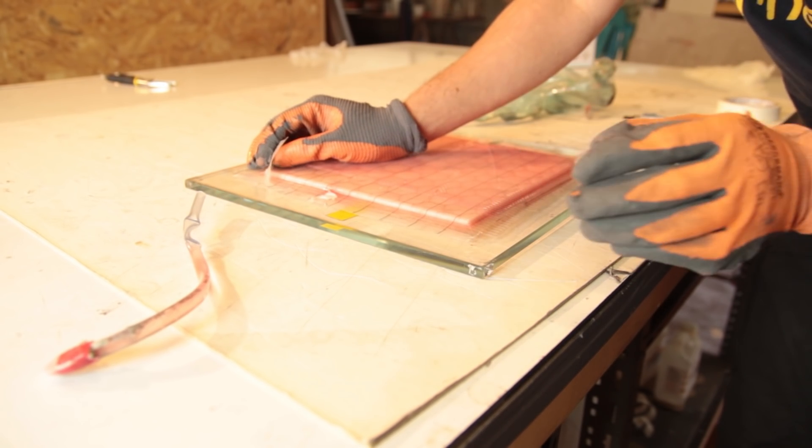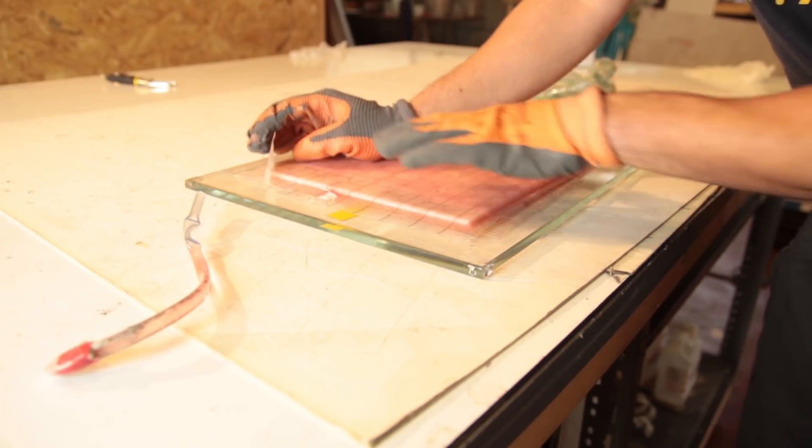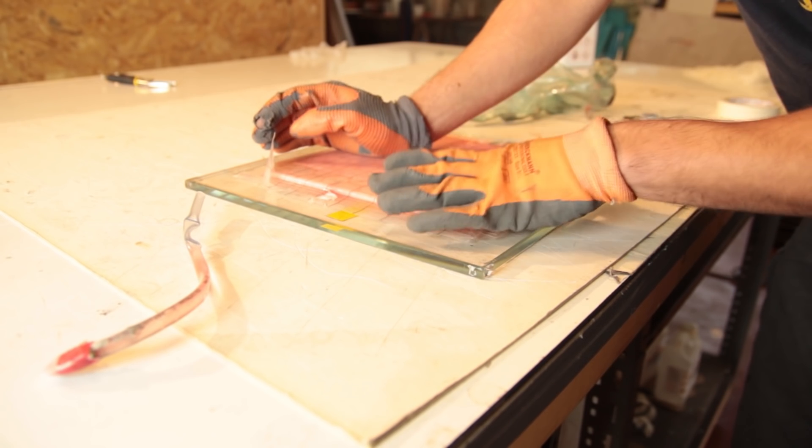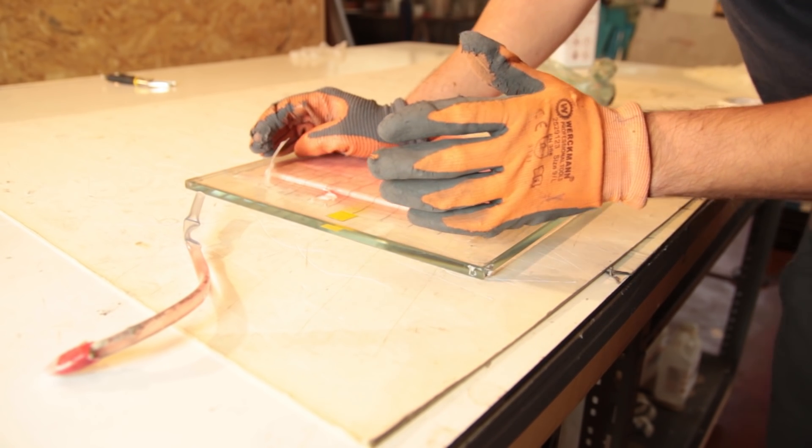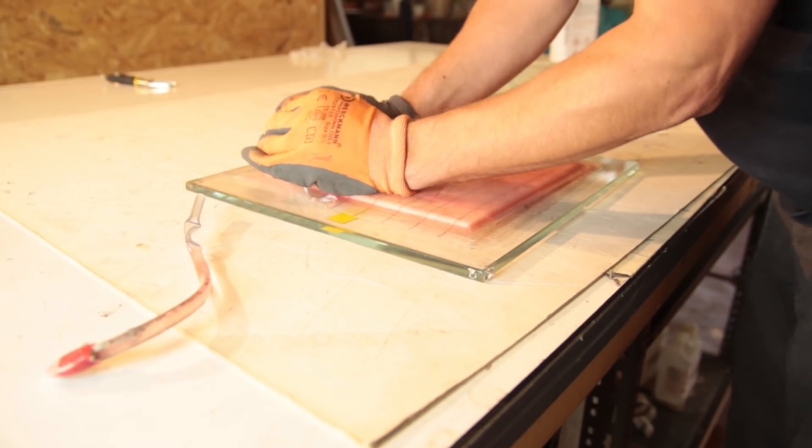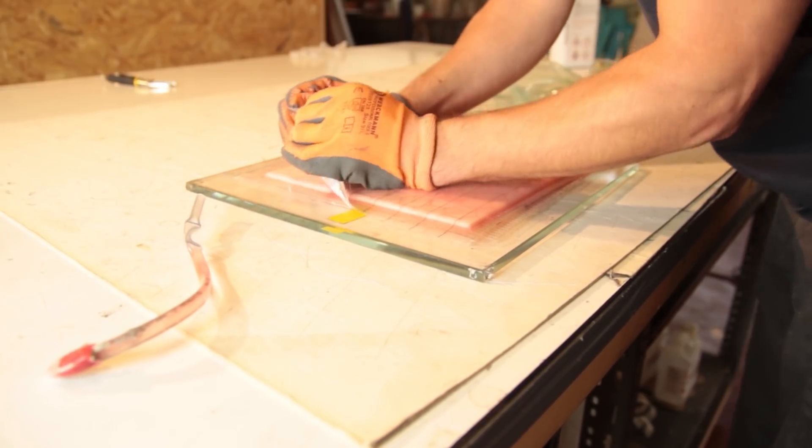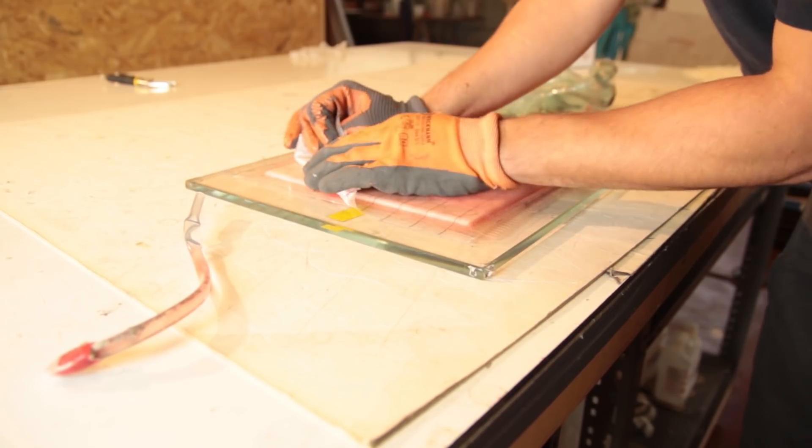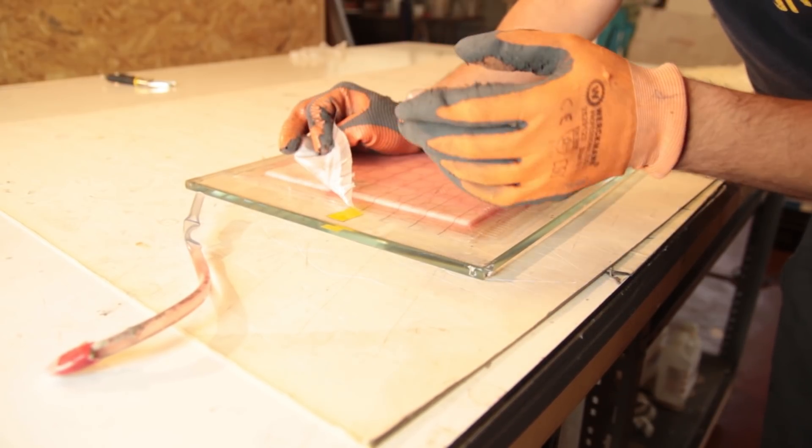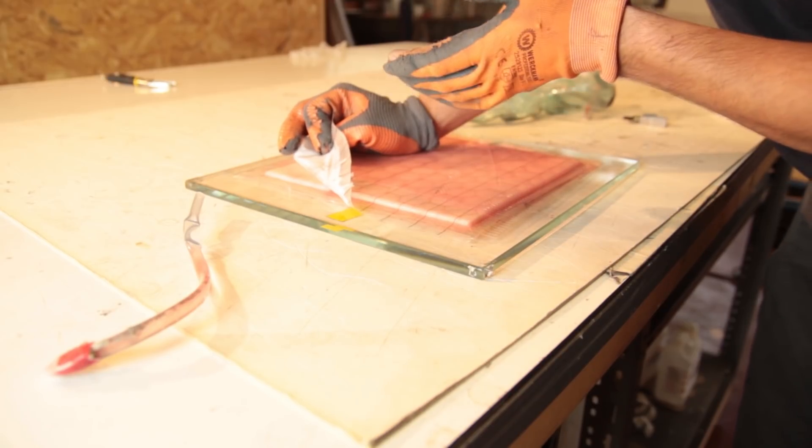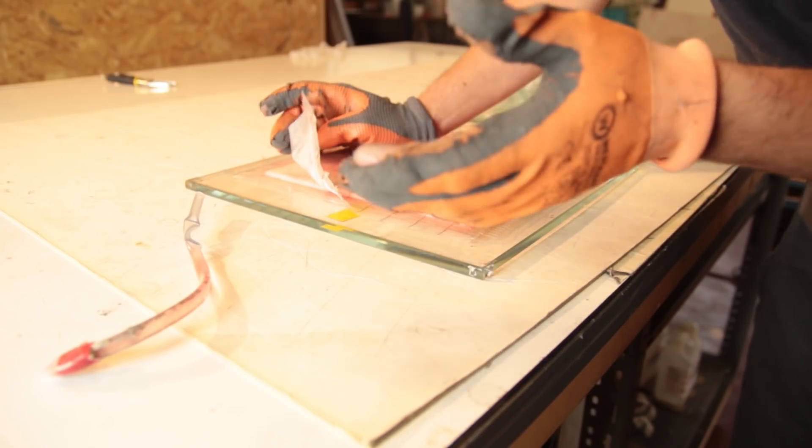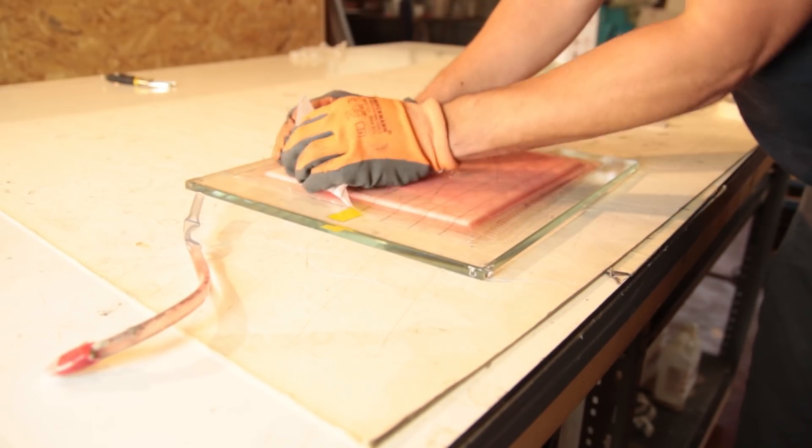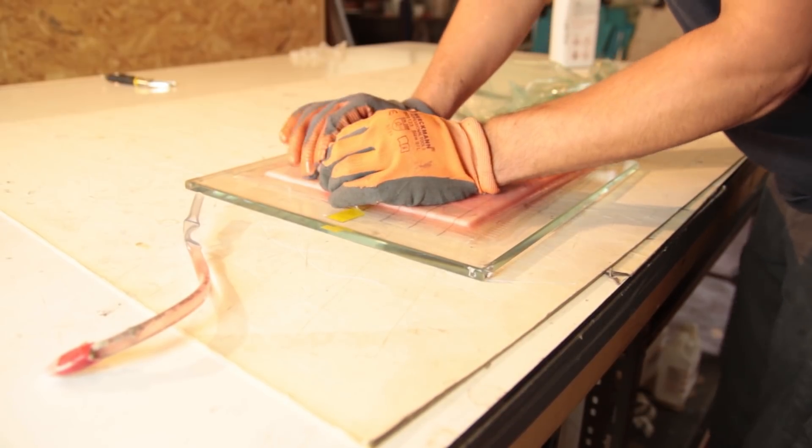I prefer to remove the peel ply when the part is still on the mold or plate, just to be sure not to bend it or crack the resin. The peel ply will remove the infusion mesh and leave us a nice finish. It's a bit textured, but it's good if you want to apply a second coat or glue another piece on it. That's why it's good to have peel ply.